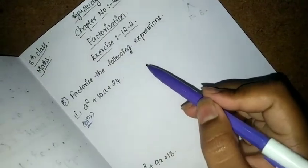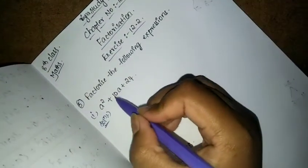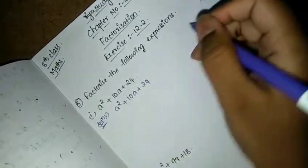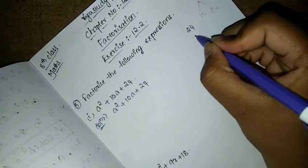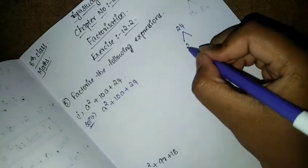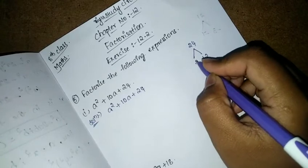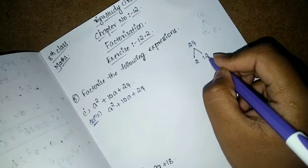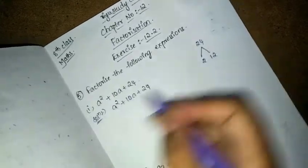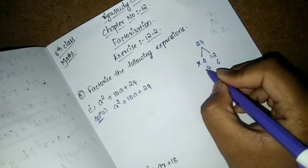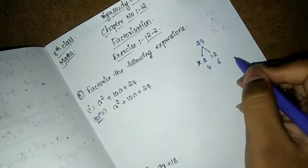Factorize the following expressions. The first one is a square plus 10a plus 24. Solution for this is a² + 10a + 24. Here 24 we can write as 2 times 12 is 24, but 2 plus 12 is 14. But we have 10 here, so this is wrong pair. Next 4 times 6 is 24, 4 plus 6 is 10. So this is the correct.